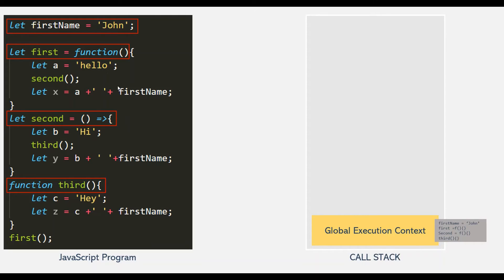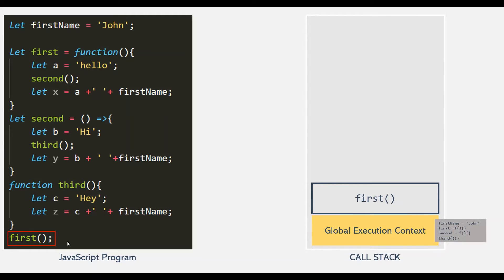So in this program, after declaring the firstName variable and the first, second, and third functions, we are calling the first function. When this first function is called, it gets its own execution context on top of the currently executing execution context, which is the GlobalExecutionContext. When the execution context of this first function is created, it will become the active execution context. And the execution of the GlobalExecutionContext will pause. Also, the execution control will reach to the definition of the first function.